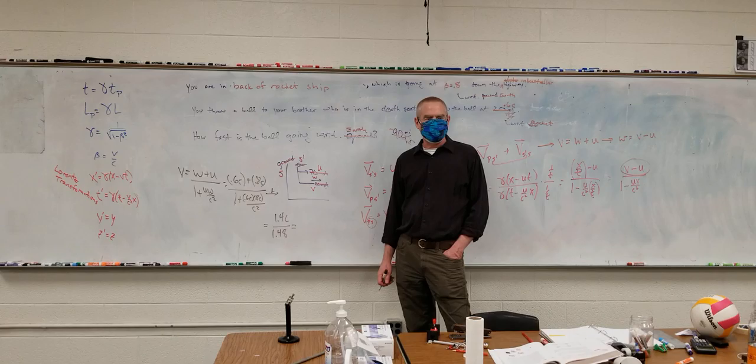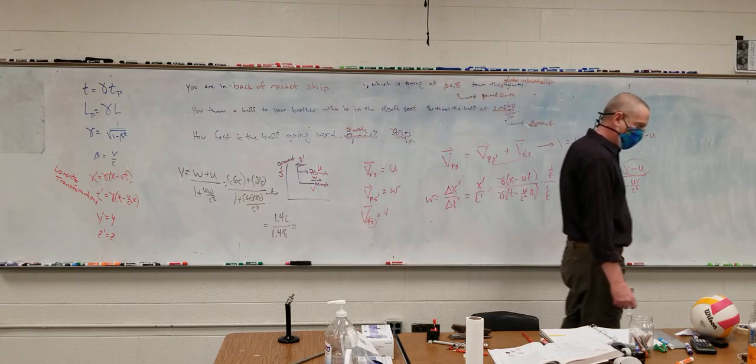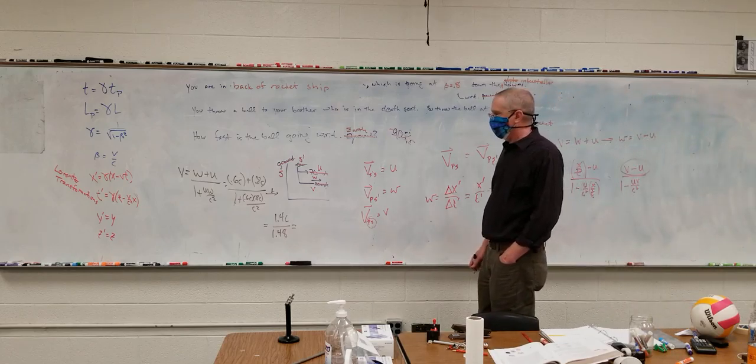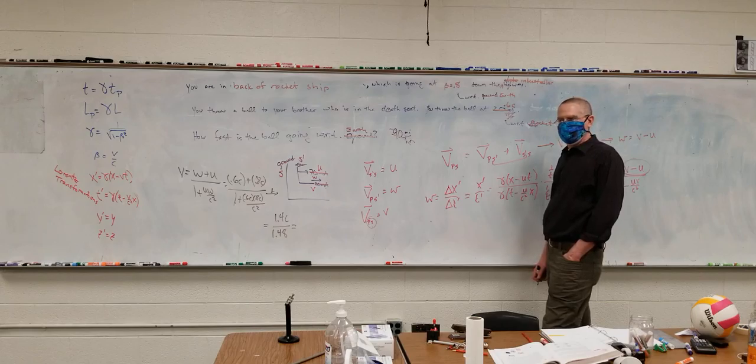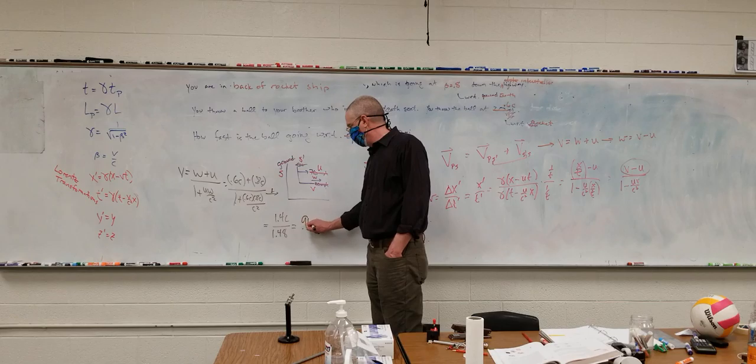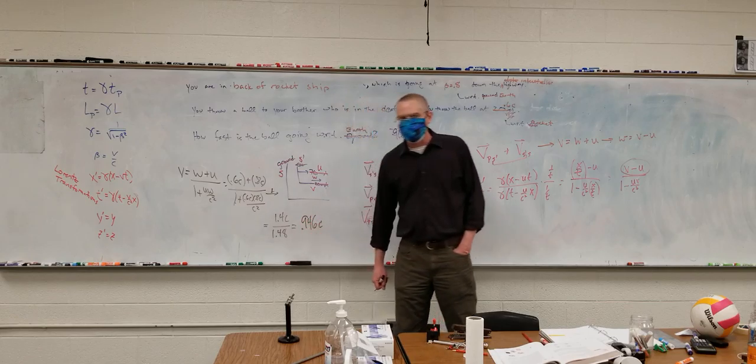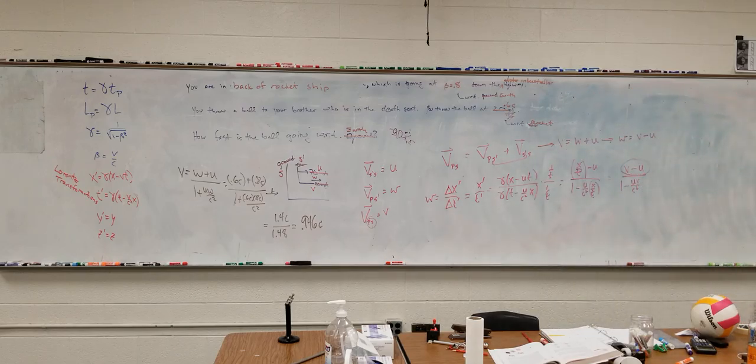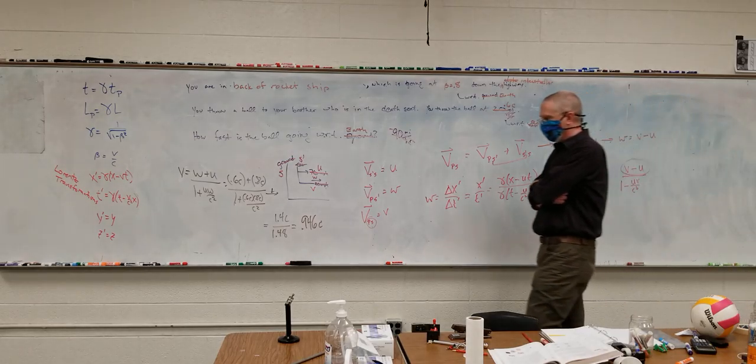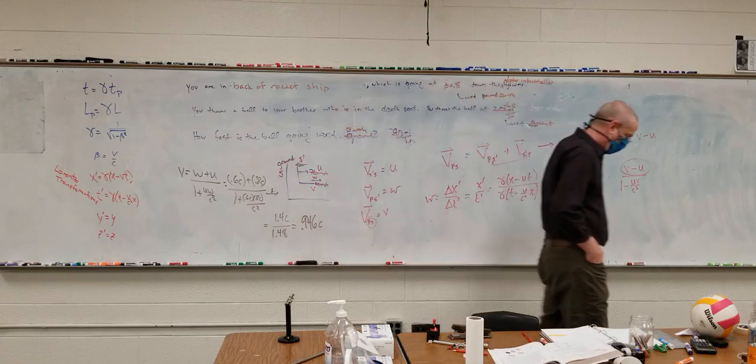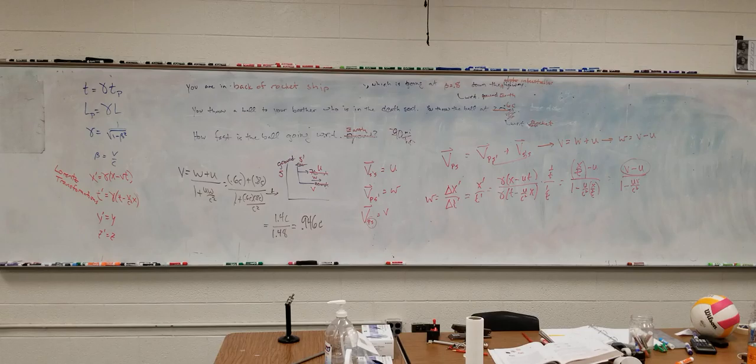No, just express the answer in terms of C, you don't have to actually give me meters per second. 0.946C. Yeah that's what I got. All right, so beta is 0.946. And thus despite what you were told growing up, 0.8 plus 0.6 is not 1.4 but 0.946. Okay, there's a lot more context to it but. All right, questions be here.